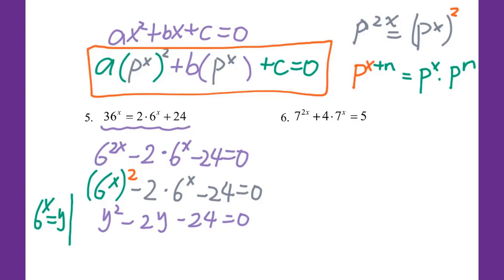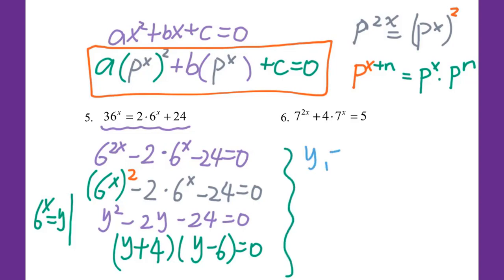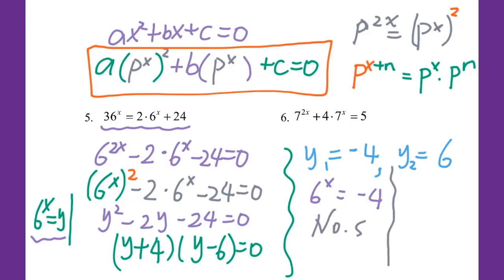Factor: we get y plus 4 and y minus 6 equal to 0. So y₁ equals negative 4, and y₂ equals 6. Since our variable is not y but x, we plug back in using y equals 6 to the x power. For y₁: 6 to the x power equals negative 4 — you cannot get a negative number for 6 to the x power, so there is no solution. For y₂ equals 6: 6 to the x power equals 6, so x equals 1. That's the solution for number 5.